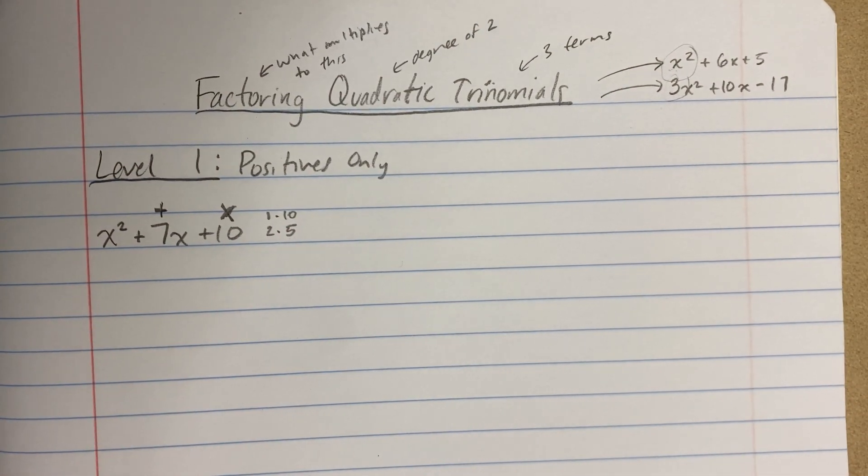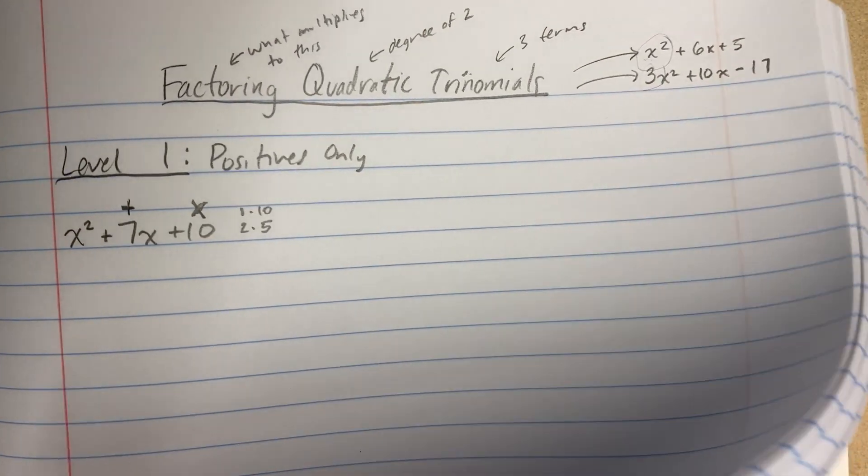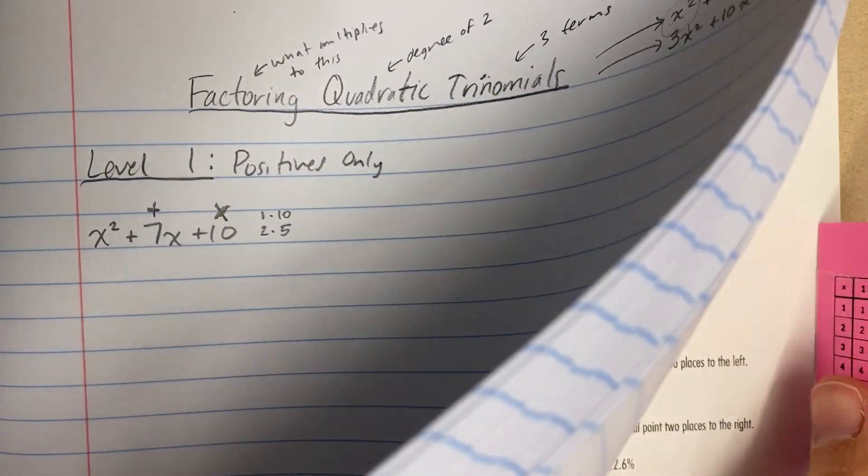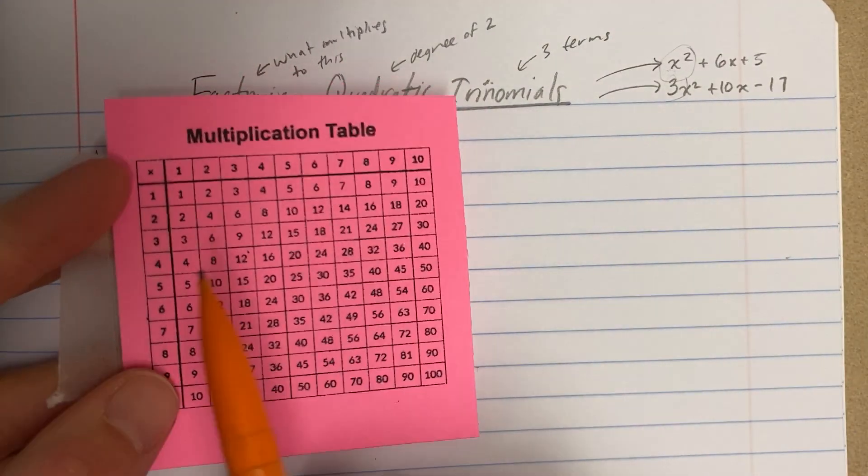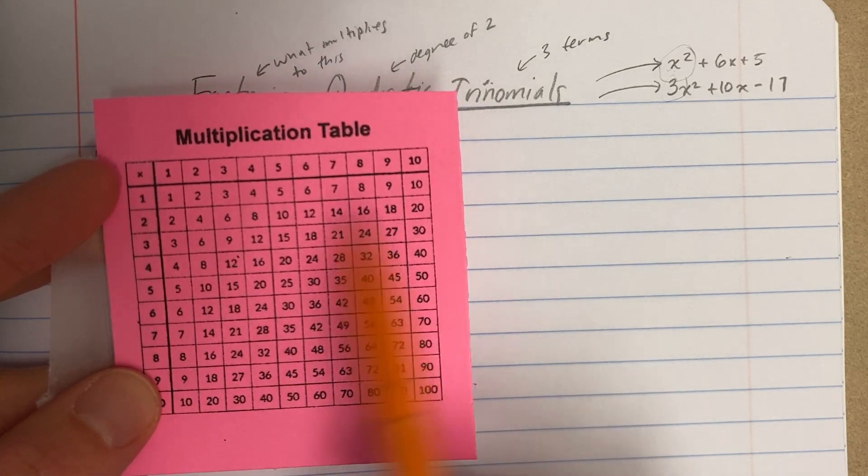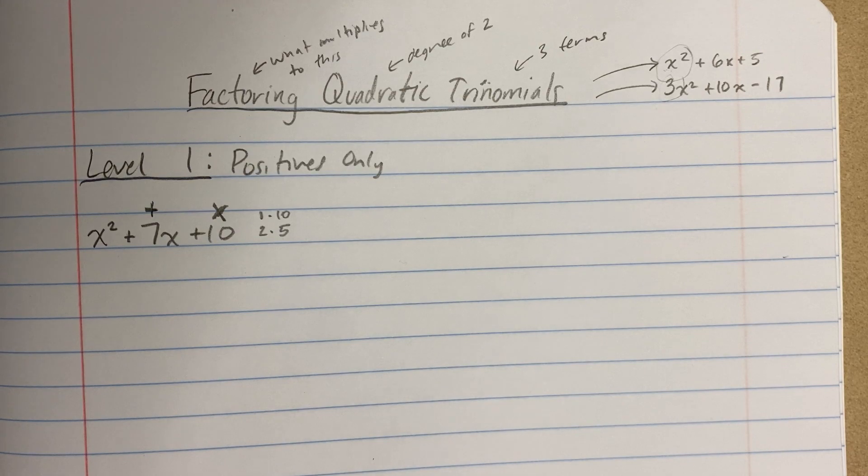And what you can do is you can use your multiplication chart. You can use the one in your notebook or your extra. Here's mine. You can use your multiplication chart as needed. So, like, if I was thinking, does 3 multiply to 10? No, it doesn't. Does 2 multiply to 10? Yes, it does. 2 times 5, right? So just make use of your resources as needed.